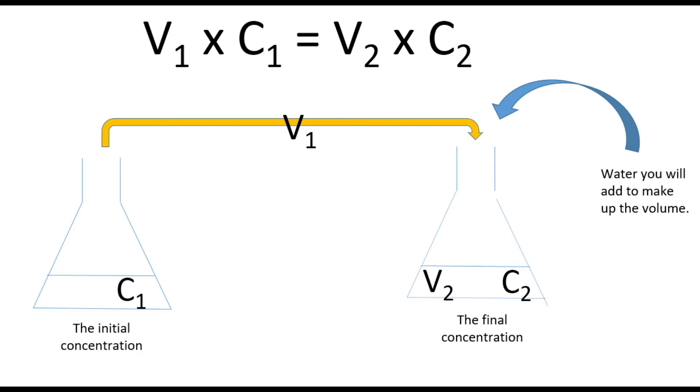Before we start, let's have a look at this graphic and remind ourselves what the V1, C1, V2, C2 actually stand for. The V1 is how much of your stock solution are you going to remove to put into your particular dilution. Your C1 is the concentration of your stock solution. Your V2 is how much do you want at each particular dilution. In this case, it's 20 mils and your C2 is the desired concentration of each dilution that you want to make.